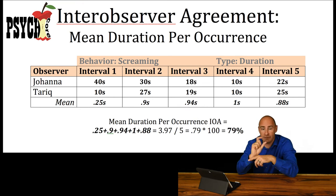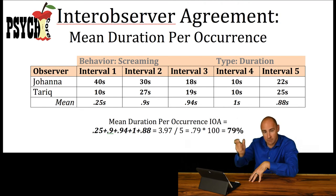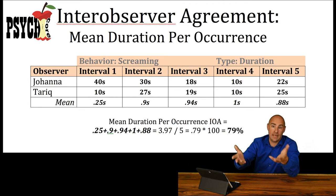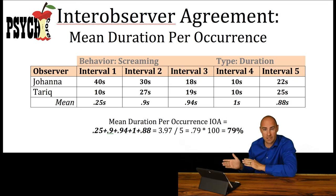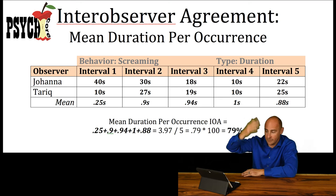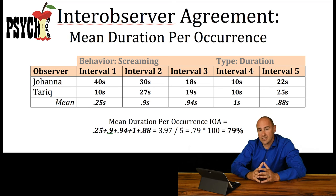We're going to do that for each and every interval that you have within your time period. And then you're going to average those ratios, those percentages. It could be all the way from 0% agreement to 100% agreement in each interval, and you have a continuous scale in there, basically unlimited. And then you average all those out.